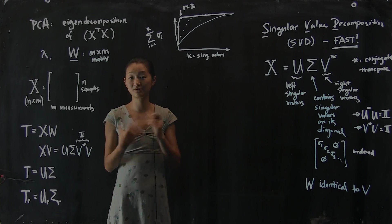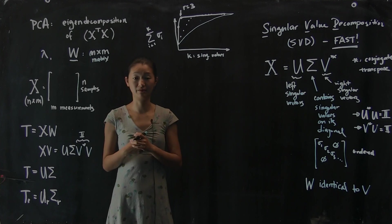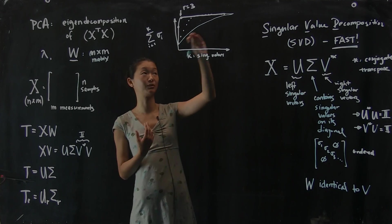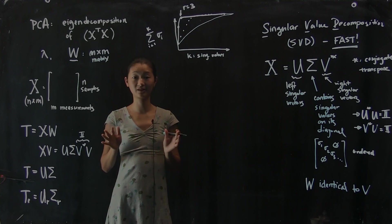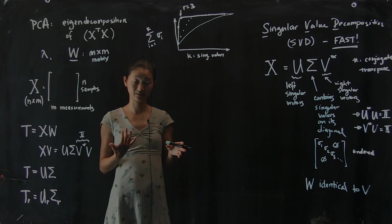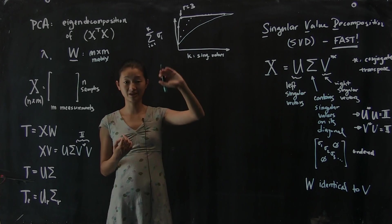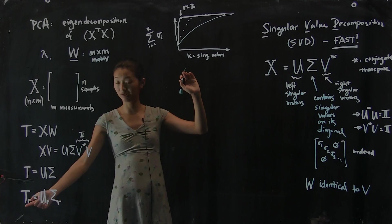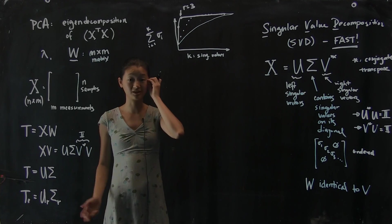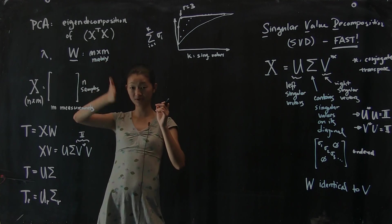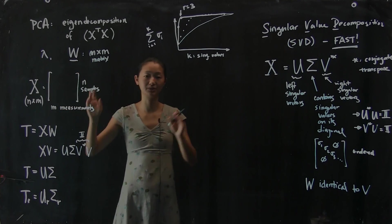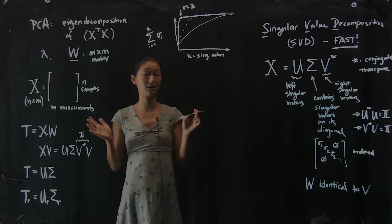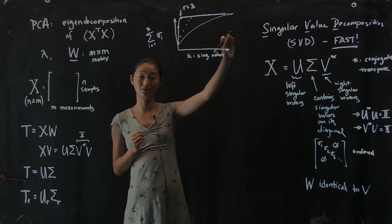And so the practical considerations are the following. For example, if you want to visualize your data, even if the spectrum looks like this, sometimes picking the first two just for visualizing purposes is perfectly fine because that's a nice way of just looking at the data. So you can pick the first two, project everything onto r equals 2, and plot T sub r, T sub 2. So it has two columns, N samples, two columns. Those are the projections of your data onto the first two principal components and you can look at them that way, even if your spectrum of singular values looks like that.